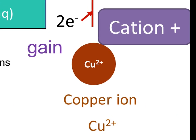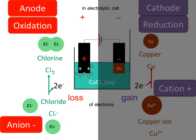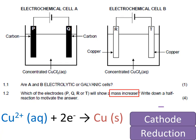So the copper cations are reduced at the negative cathode. This is the half-reaction relevant to this question about mass increase. Also remember that the chloride ions are oxidized at the positive anode. Q and T are the negative cathodes in this question, so they are the electrodes which will increase in mass.